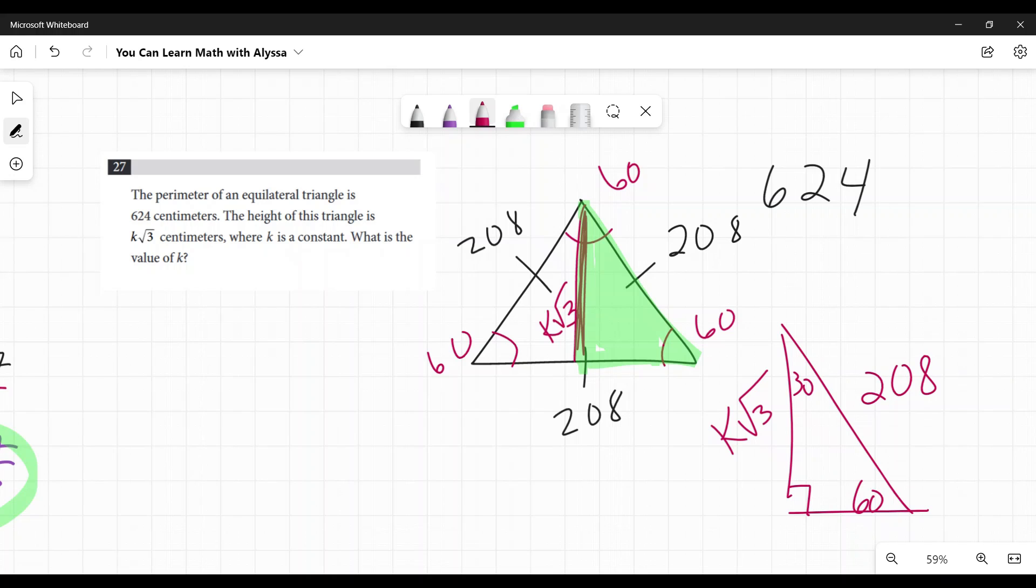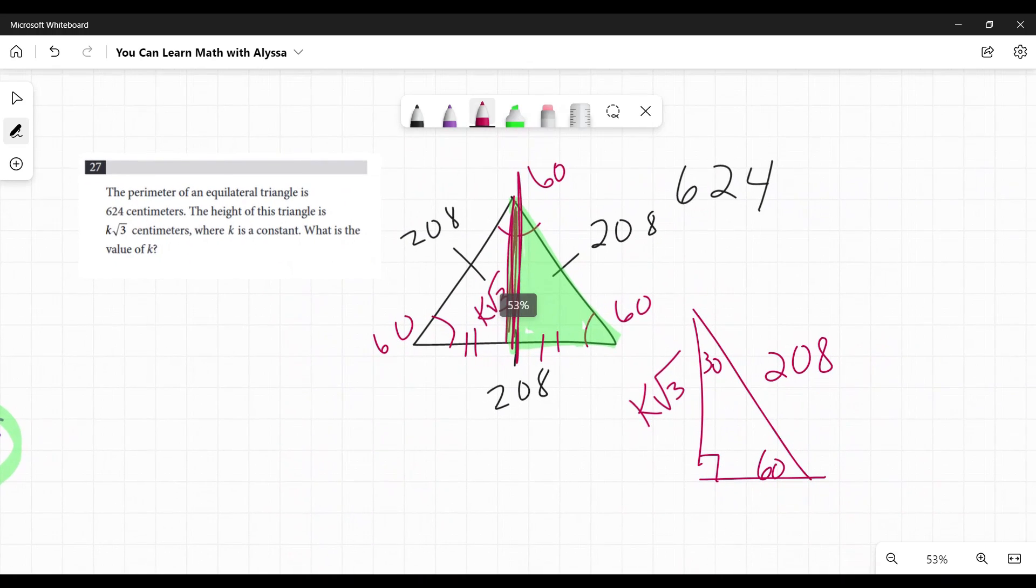Now, two ways you can get this bottom side here. One, you can say, all right, this is coming down, it's dividing this in two. So these are two equal sides there. 208 divided by two is 104.